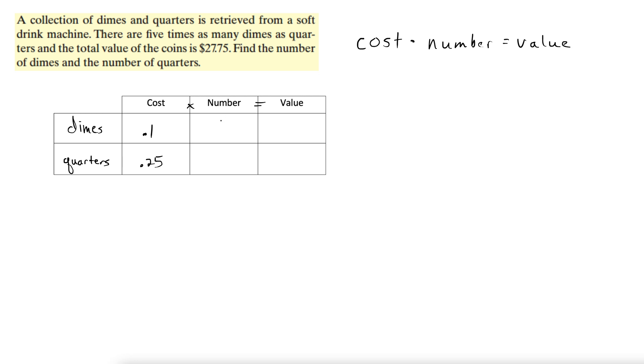Okay. Let's see here. There are five times as many dimes as quarters. So what that tells me is if I let x be the number of quarters, then there are five times as many dimes. Five times as many dimes as there are quarters. So let x be the number of quarters.